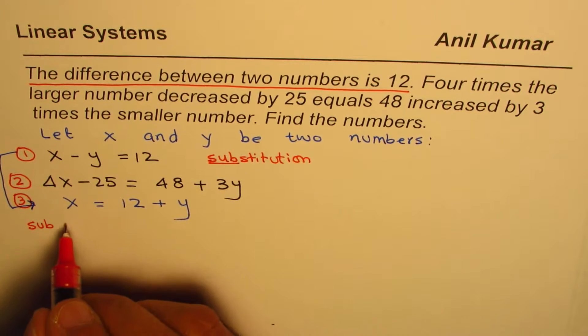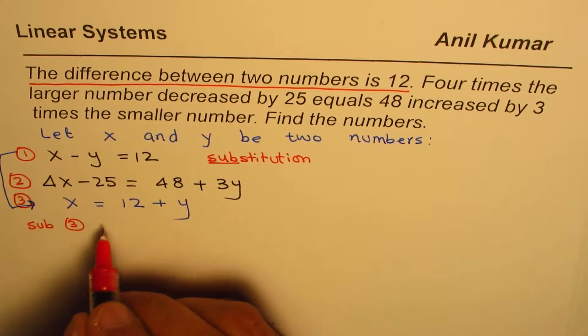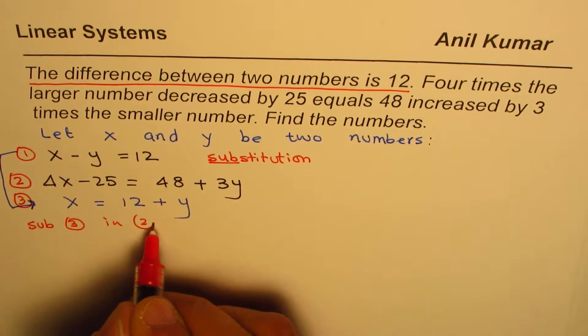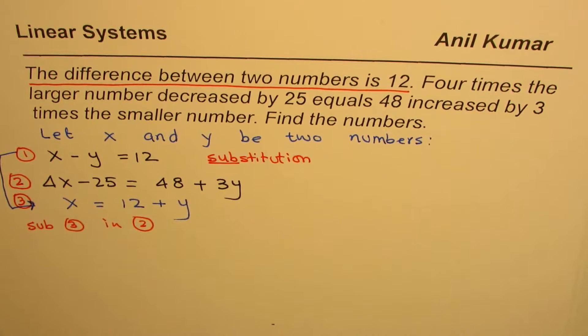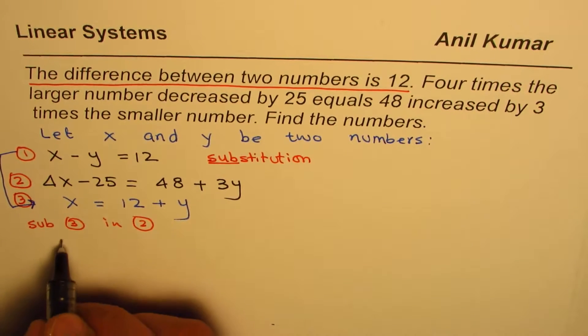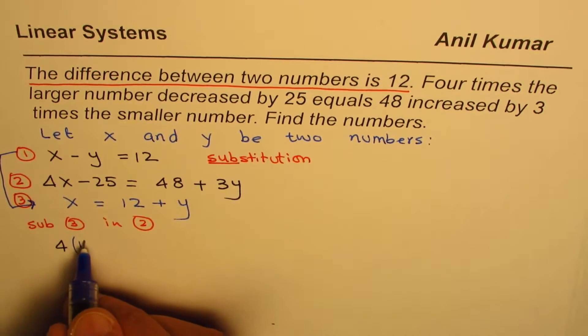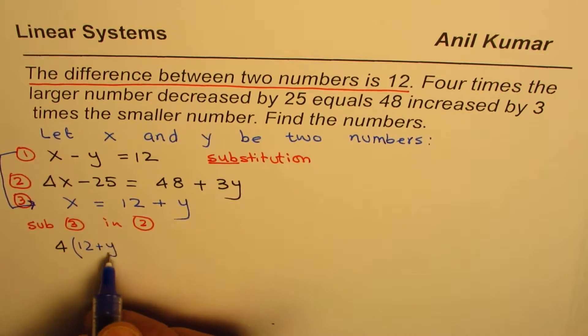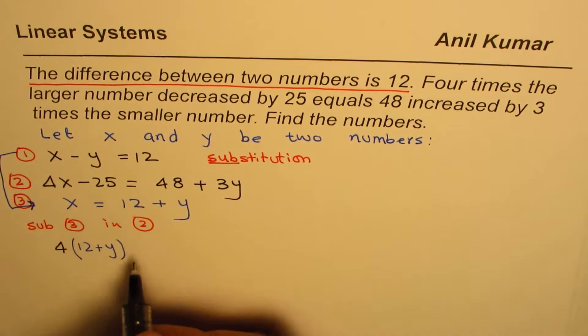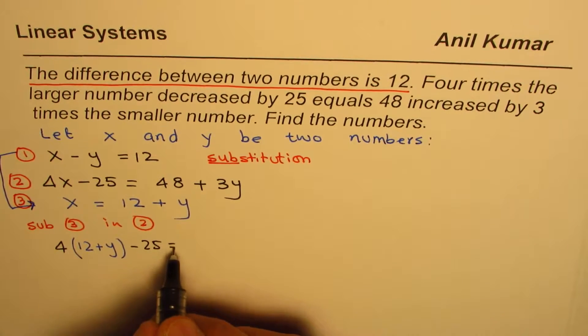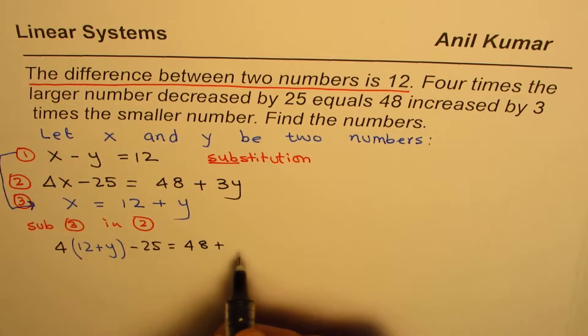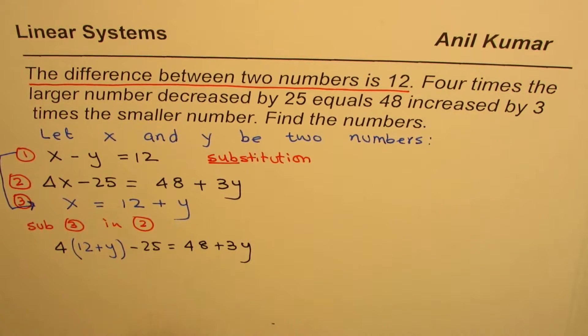4 times the value of X, which is 12 plus Y, so we write 4 times 12 plus Y, then minus 25 equals 48 plus 3Y. Now we get an equation in one variable which can be solved.